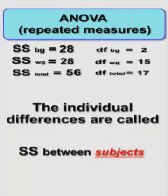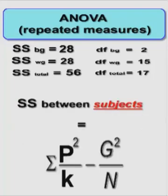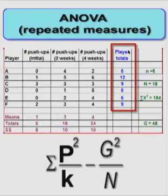The individual differences are called between-subjects sum of squares. Do not be confused with between-groups sum of squares. These are called between-subjects sum of squares, only used in repeated measures. This P, if you remember, is the total from each individual.